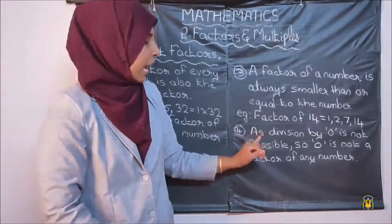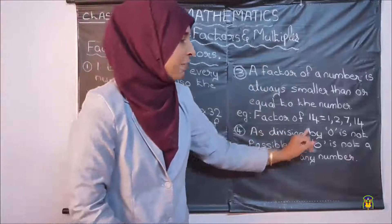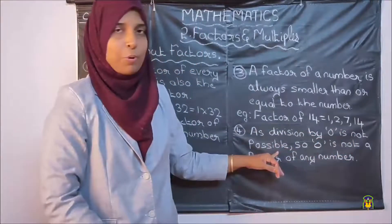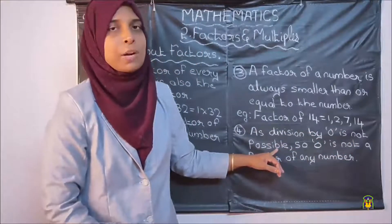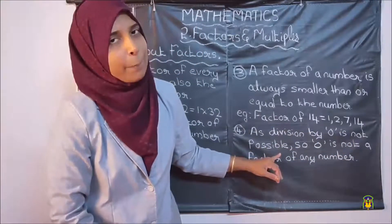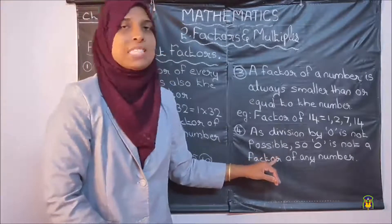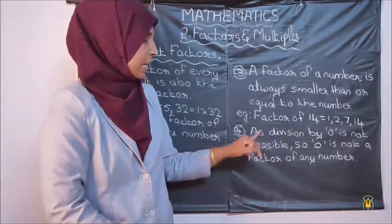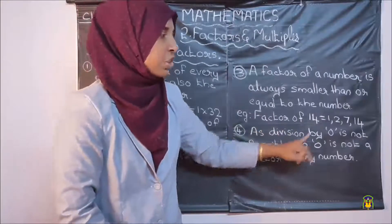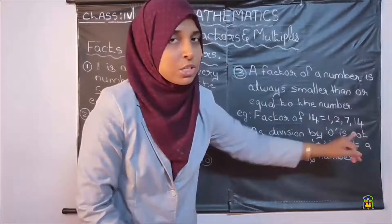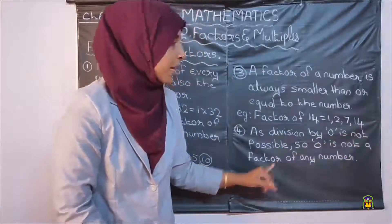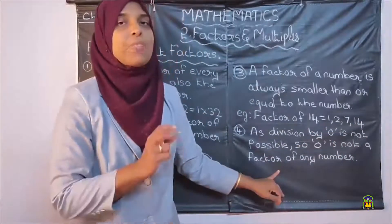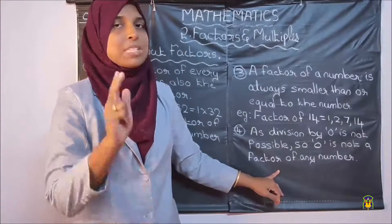Fourth point: as division by 0 is not possible — it is one of the properties of division we have already studied in the last lesson — 0 is not a factor of any number.